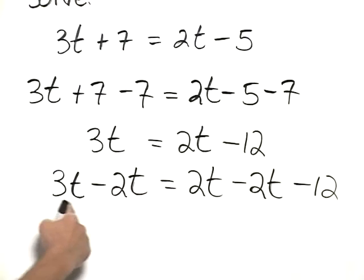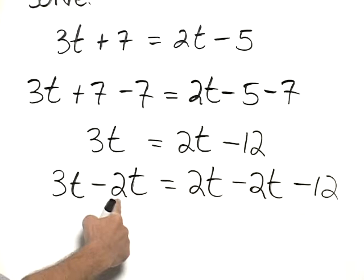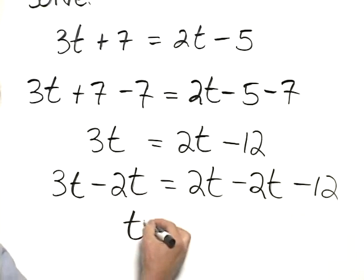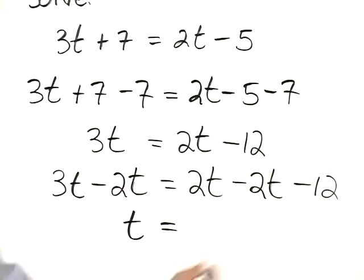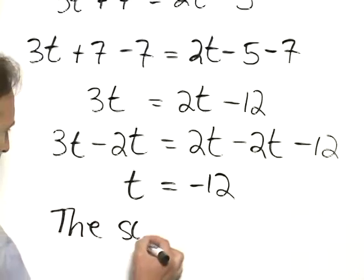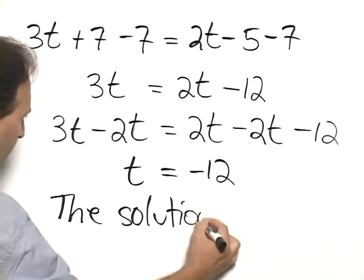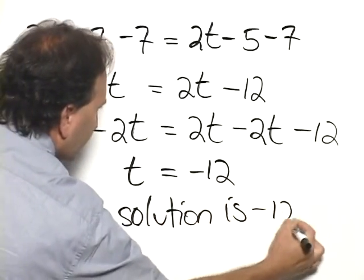On the left-hand side, we subtract the coefficients. 3 minus 2 is 1, so we have 1t, which I just write as t. On the right-hand side, these sum to 0, which is what we would expect, and so we have negative 12, and therefore the solution is negative 12.